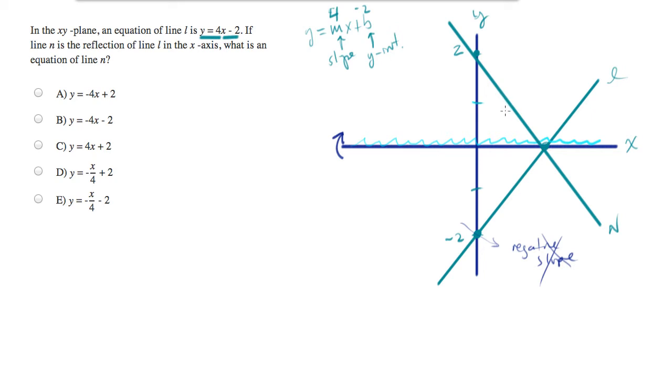So we've actually been asked for the equation of line N. And we can start figuring that out. I want to show you a form for the equation of a line, which is called point slope. Here's point slope form, and you should memorize this.